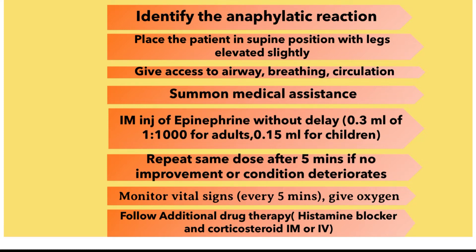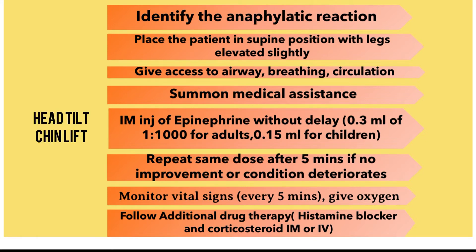Step by step management: the first step is to identify the anaphylactic reaction. The second step is to place the patient in the supine position with legs elevated slightly. The third step is to ensure access to airway, breathing, and circulation — the ABCs. Make sure the airway is not compromised; you can do a head tilt or chin lift, and confirm the patient is breathing and circulation is normal.